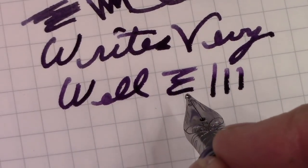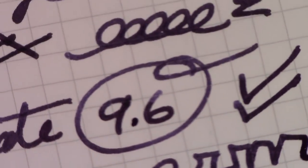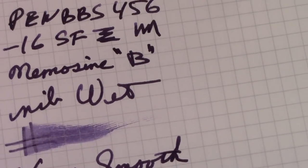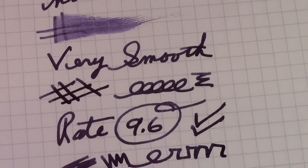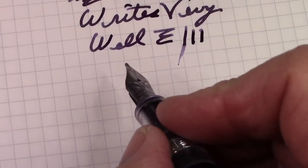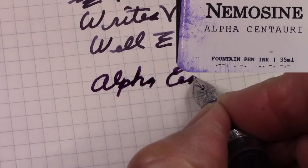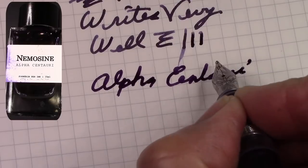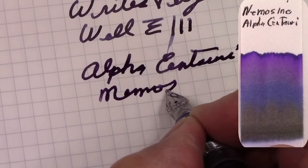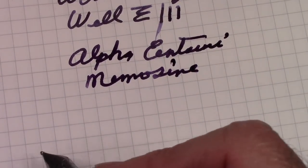So I'm just impressed. It stays wet for a long time. This nib is... this ink is Alpha Centauri, which is a Nemosine ink. It's great.